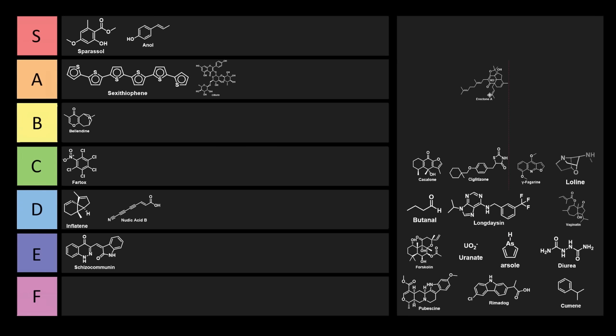Next, let's look at erectone A. So erectone A is kind of an amusing name. This one comes from a flowering plant called Hypericum erectum, a very unfortunate name for a plant. And if this was a most unfortunately named plants tier list, Hypericum erectum would definitely be the one that takes the cake.